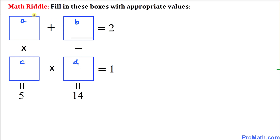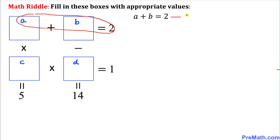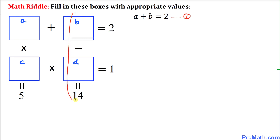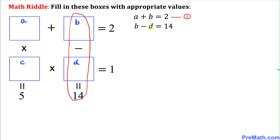Let's focus on these two boxes: A plus B equals 2. I'll call this Equation 1. Now let's look at the next two boxes: B minus D equals 14. I'll call this Equation 2.